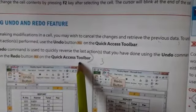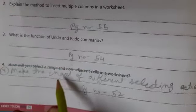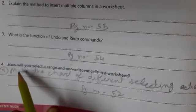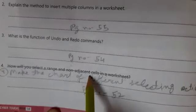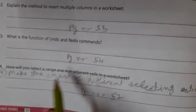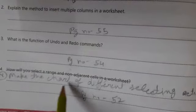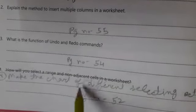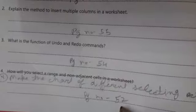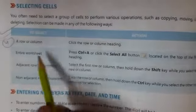Now question number four: I have changed this question for you. So how will you select a range or non-adjacent cell? You need not to write this question. Write this changed question: Make the chart of different selecting actions. So for this, page number 52.